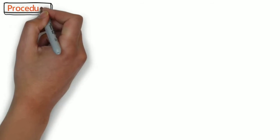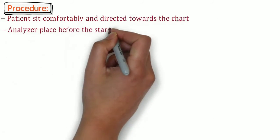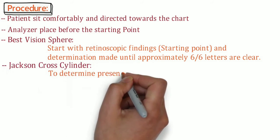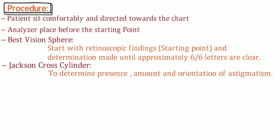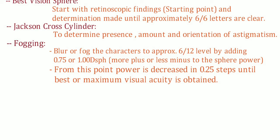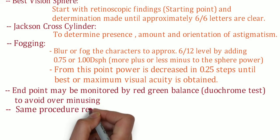Polarization method procedure. The patient sits comfortably and is directed toward the chart. Best vision sphere: start with retinoscopic findings as the starting point, reducing fog until approximately 6/6 letters are clear. Then use Jackson Cross Cylinder to determine the presence, amount, and orientation of astigmatism. Then fog — blur or fog the characters to approximately 6/12 level by adding +0.75 or +1.00 diopter spherical. From this point, power is decreased in 0.25 steps until best or maximum visual acuity is obtained. The endpoint may be monitored by the red-green balance (duochrome test) to avoid over-minusing. The same procedure is repeated for the left eye.